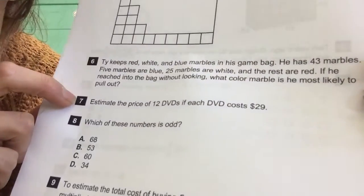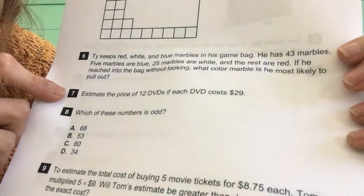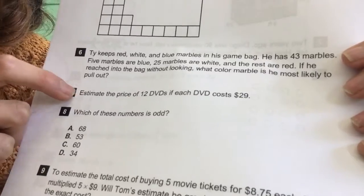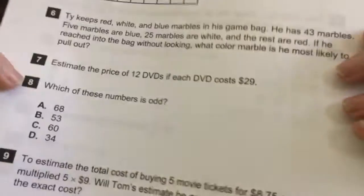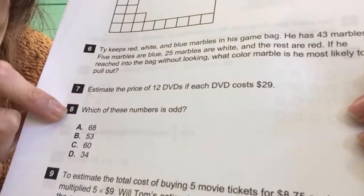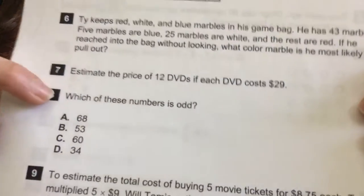Okay, seven. Estimate the price of 12 DVDs if each DVD costs $29. You need to estimate. Okay, number eight. Which of these numbers is odd? We know odd and even.